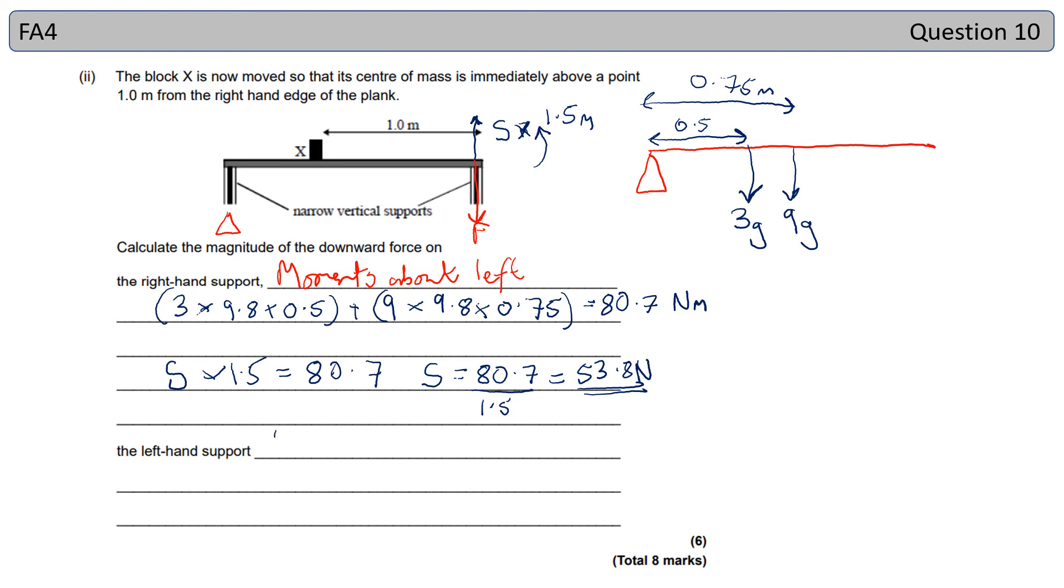Now, my downward force in total is equal to my weight of my plank, 9 times 9.8, plus the weight of weight X, so 3 times 9.8, which gives us a total downward force of 117.72 Newtons.